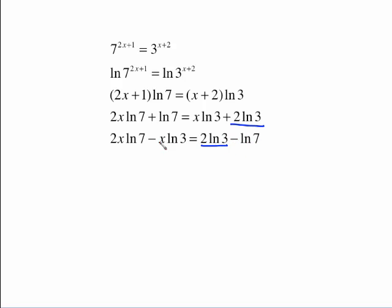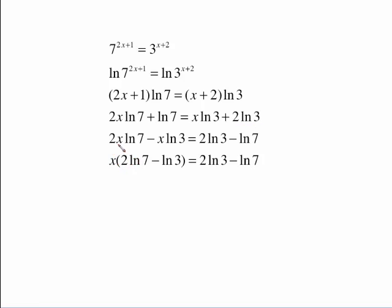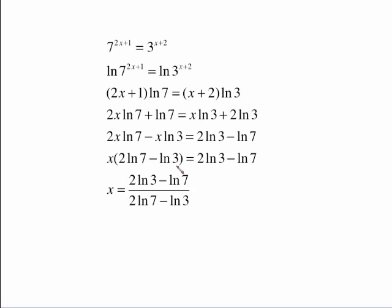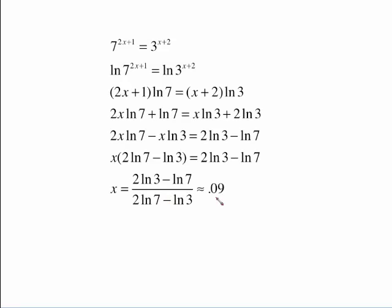But that is a number. Now look over here. You've got x written twice. The only way we're going to be able to solve this and get the x alone is to factor out an x. So we factored an x, a GCF out of this, and we're left with 2 ln 7 minus ln 3. This stayed the same. This is x times this whole quantity. To undo x times the quantity, we must divide both sides by that quantity. This is our exact answer. And type it in the calculator, and there's your approximation.